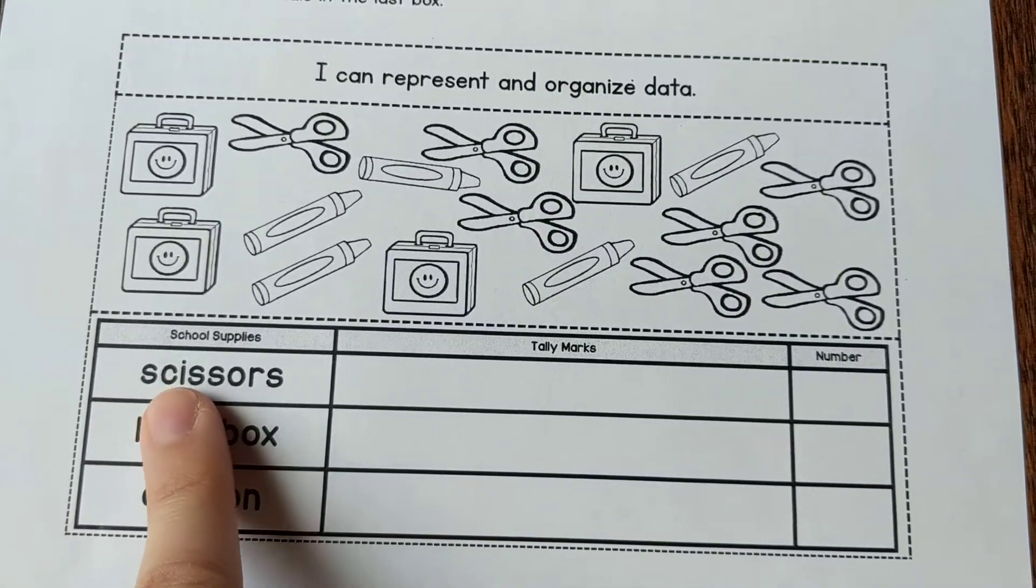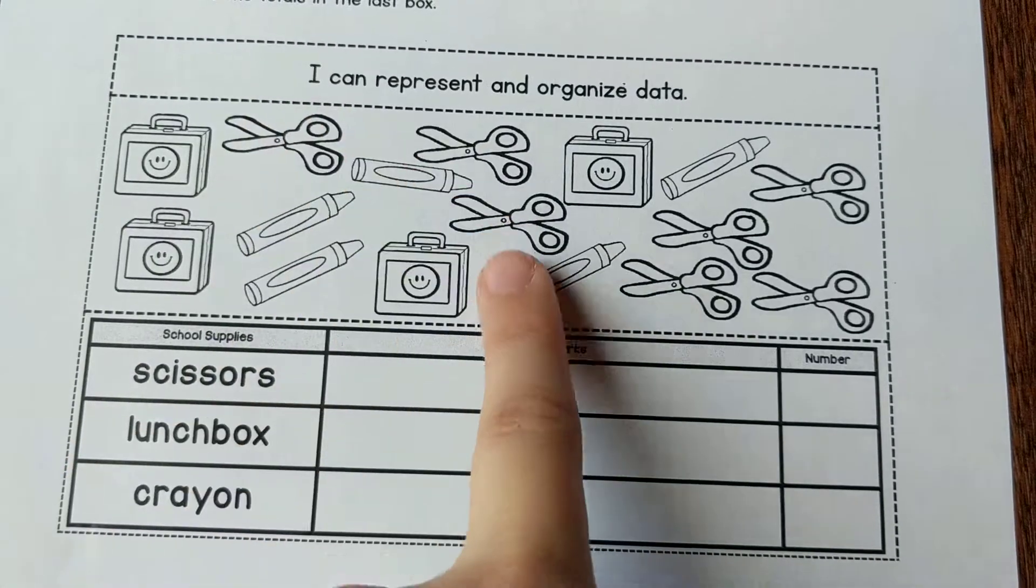So what you're going to do is you're going to pick one of these categories first. You're going to count how many there are.